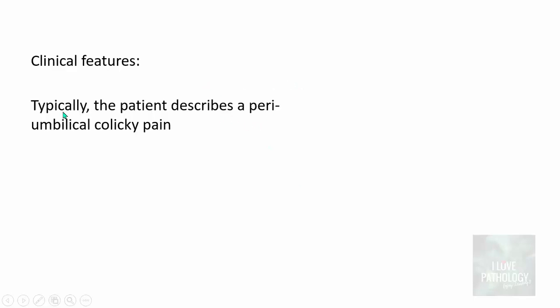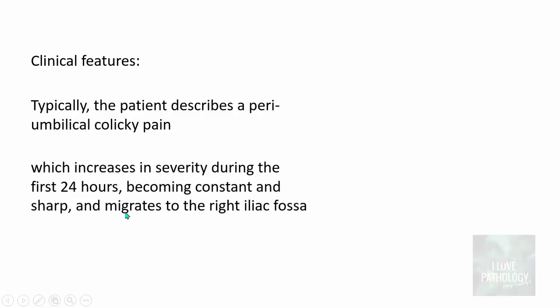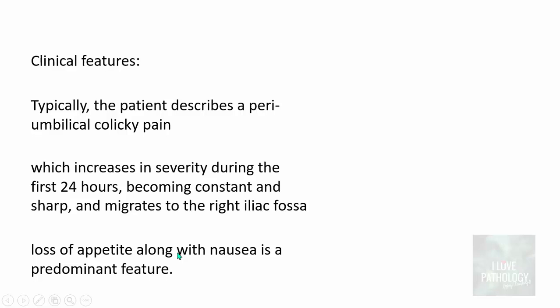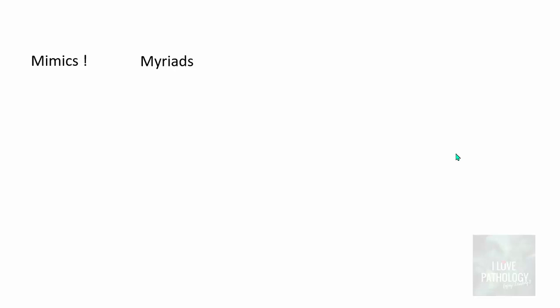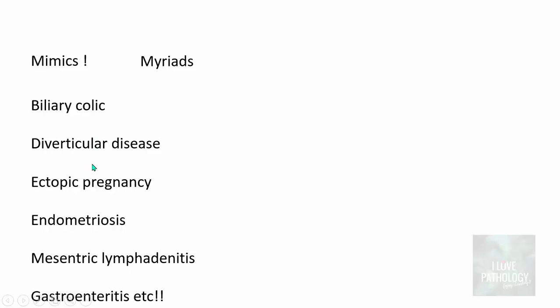The clinical features typically include peri-umbilical colicky pain that increases in severity over the first 24 hours, then becomes constant, sharp, and migrates to the right iliac fossa. Loss of appetite and nausea are common symptoms. Very high fever or abdominal rigidity may suggest a perforated appendix. There are many clinical mimics of appendicitis including biliary colic, diverticular disease, ectopic pregnancy, endometriosis, mesenteric lymphadenitis in children, and gastroenteritis.